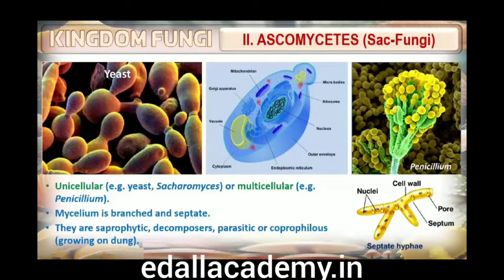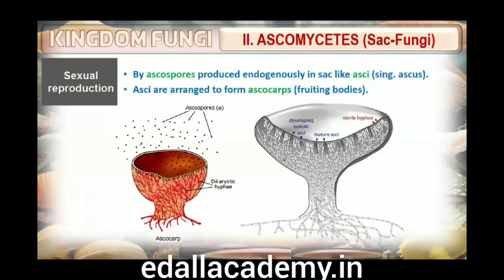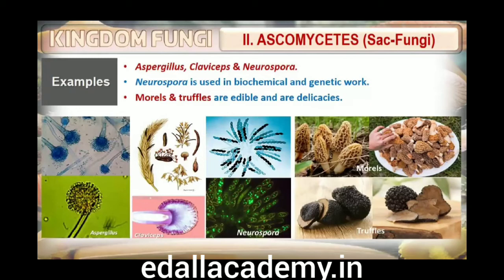Second are ascomycetes, commonly known as sac fungi. They are mostly multicellular (e.g., Penicillium) or rarely unicellular (e.g., yeast — Saccharomyces). They are saprophytic, decomposers, parasitic or coprophilous (growing on dung). Mycelium is branched and septate. The asexual spores are conidia, produced exogenously on special mycelium called conidiophores. Conidia on germination produce mycelium. Sexual spores called ascospores are produced endogenously in sac-like asci (singular ascus). These asci are arranged in different types of fruiting bodies called ascocarps. Some examples are Aspergillus, Claviceps and Neurospora. Neurospora is used extensively in biochemical and genetic work. Many members like morels and truffles are edible and are considered delicacies.